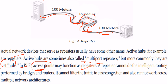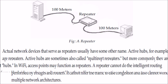A repeater cannot perform the intelligent routing that bridges and routers do, since those are intelligent devices. It also cannot filter traffic to ease congestion, nor can it work across multiple network architectures.